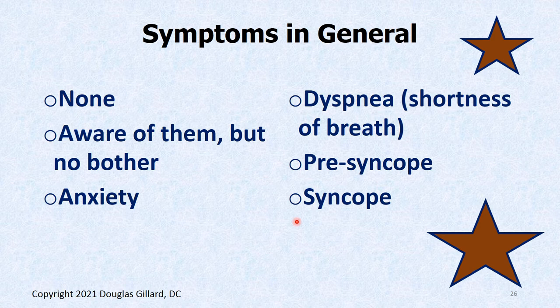What are the symptoms of palpitations? Hopefully none — some people just aren't aware of their heart. Some are aware but it's no bother. Others become very anxious thinking they're going to die. Some people, especially with PVCs — premature ventricular contractions — can get bad enough to develop dyspnea. When a PVC occurs, you're actually not getting much blood ejected from the heart.